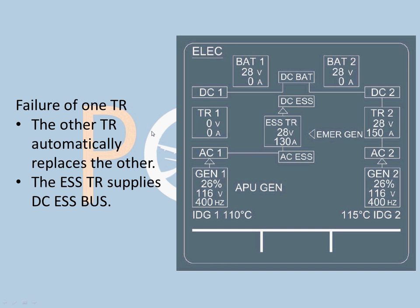If one transformer rectifier fails, the other TR automatically replaces it and the essential TR also comes into action. For example, if TR1 has failed, generator 1 cannot supply DC bus 1 directly. So it supplies AC essential and the essential TR kicks in to supply DC essential. The right side remains the same: generator 2 supplying AC 2, TR2, DC 2, then DC bat — and via that link, DC bus 1 is also supplied.